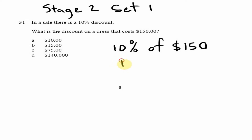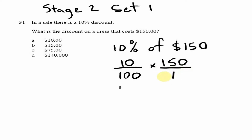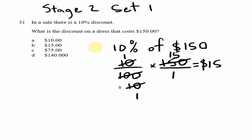10% is the same thing as 10 out of 100, and 'of' means multiplication. So we have 10/100 × 150. We can do some reducing: 10 into 100 goes 10 times, 10 into 150 goes 15 times, so 1 × 15 = 15. Therefore our discount would be $15, which is option B.